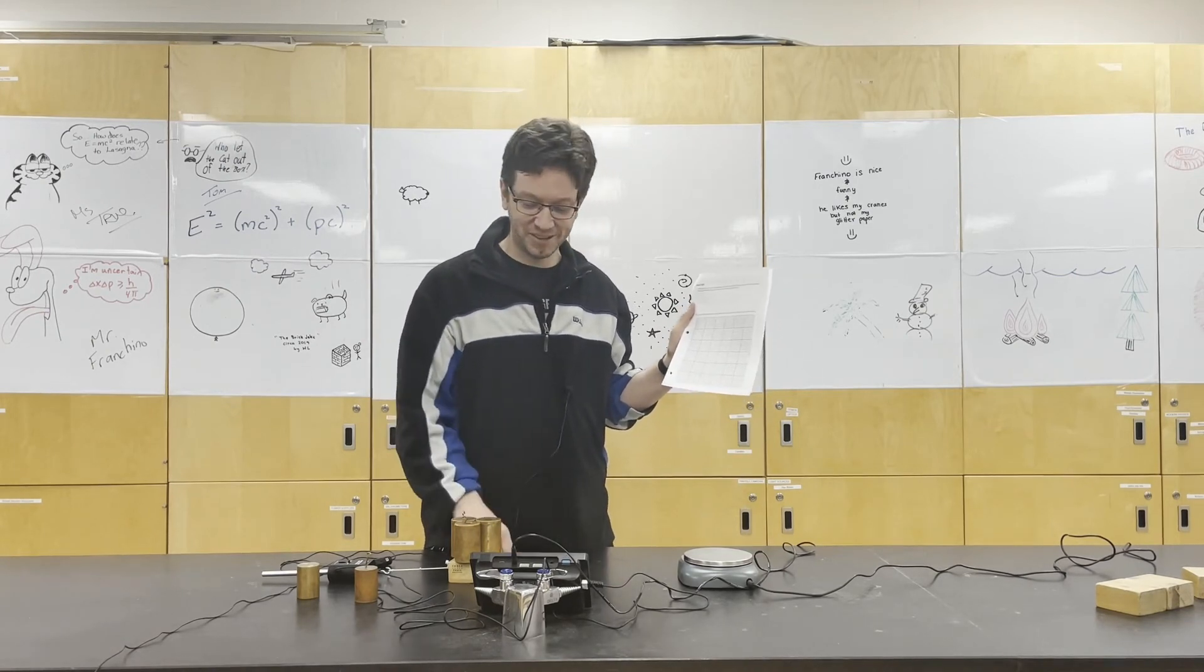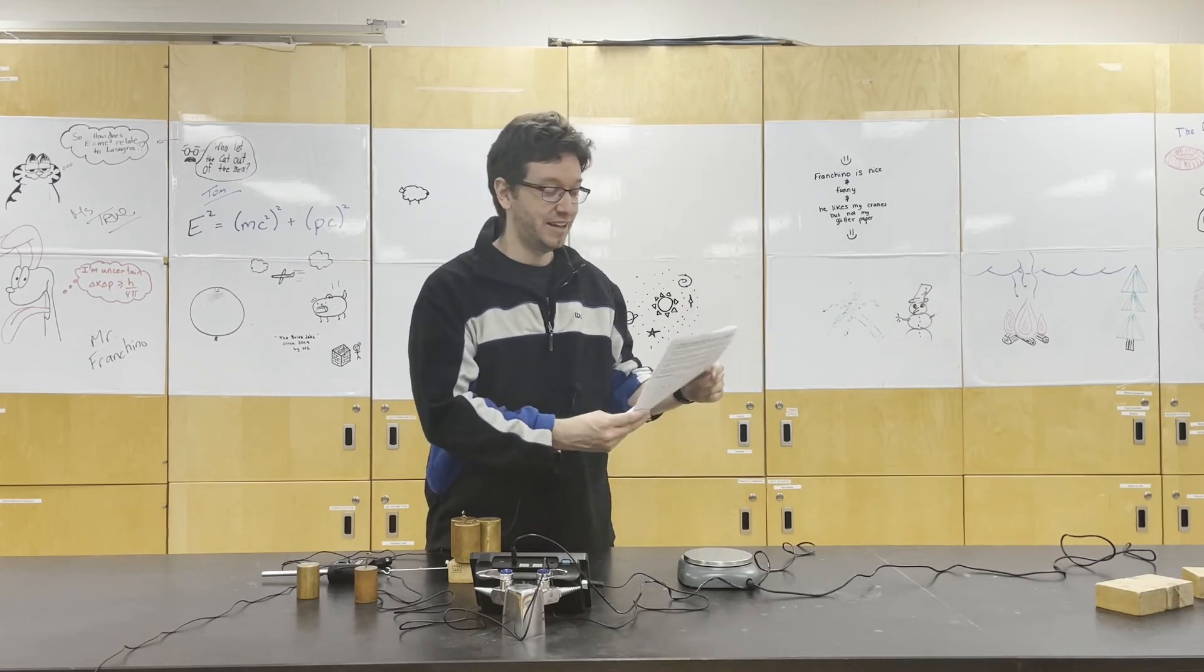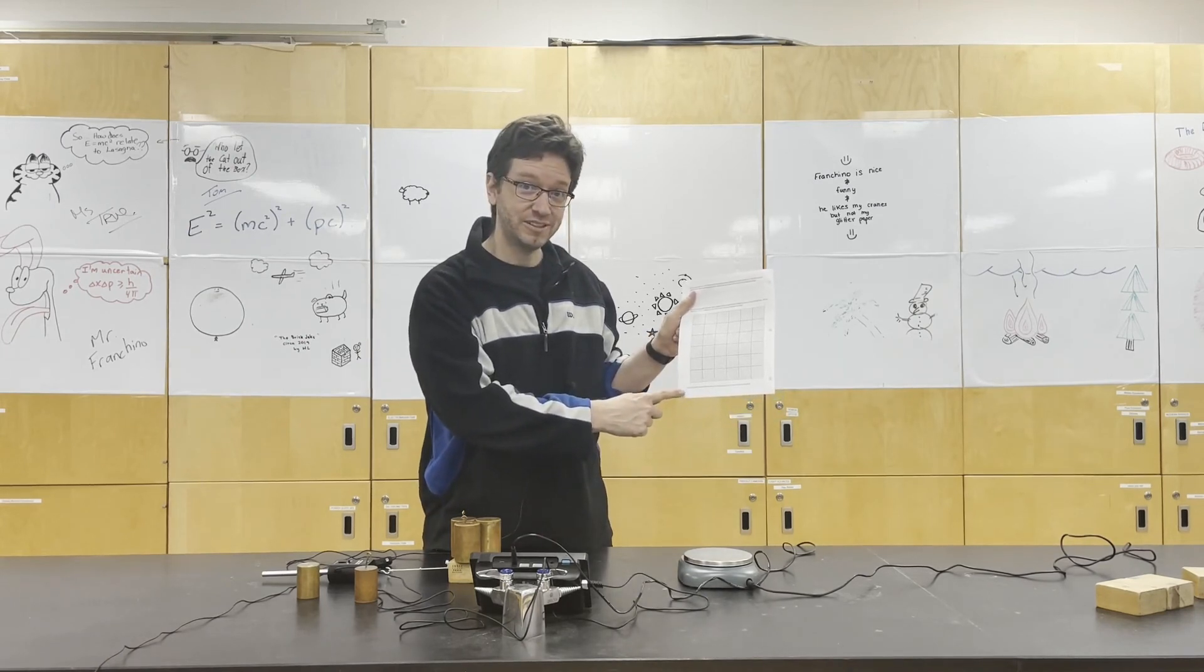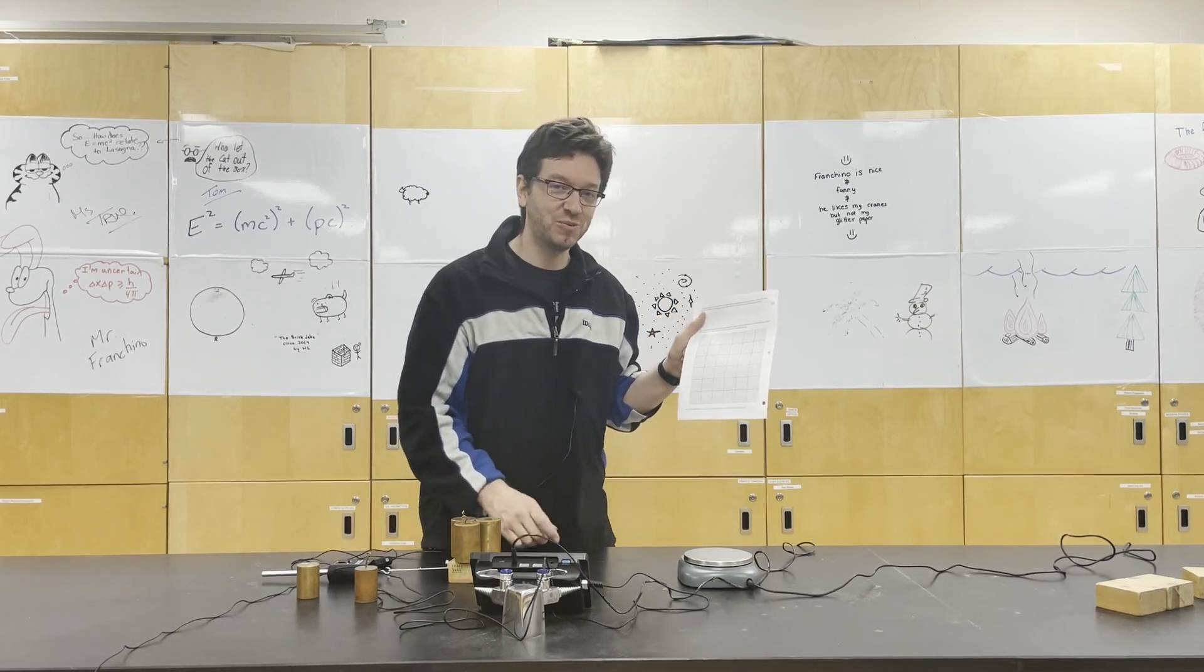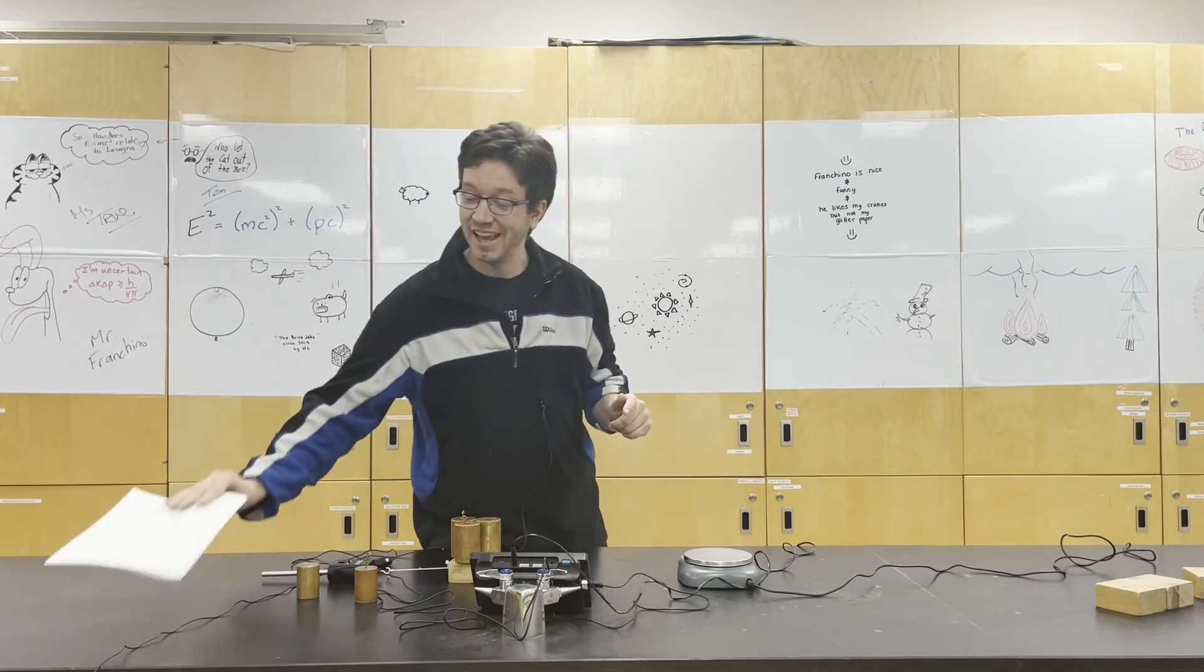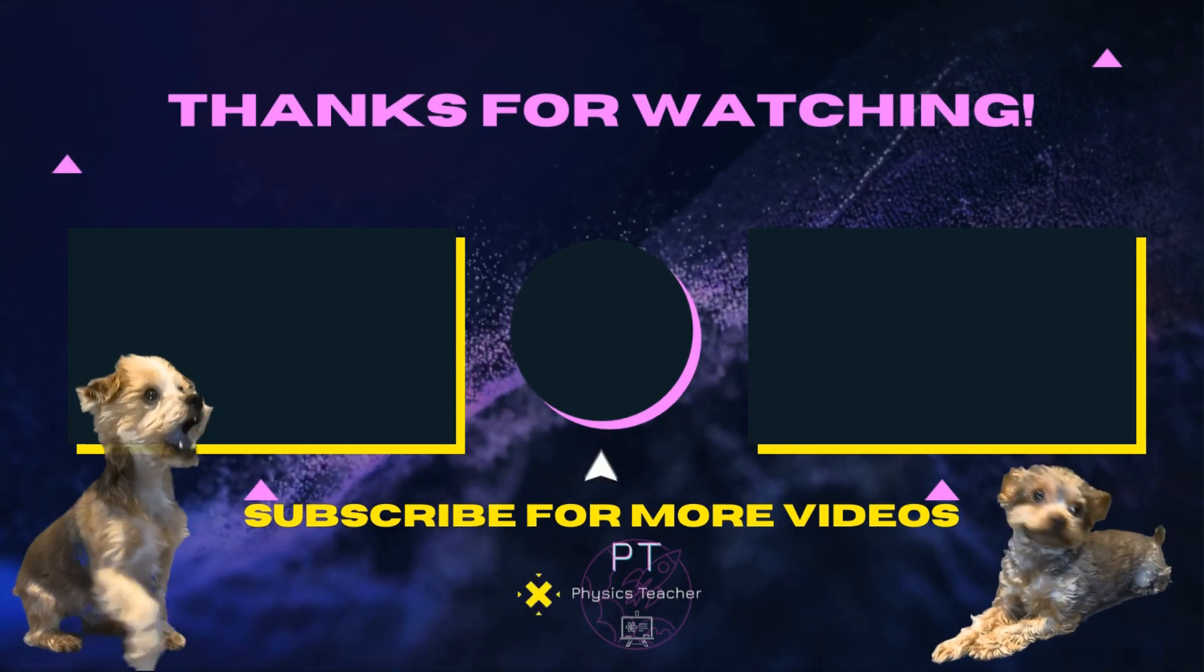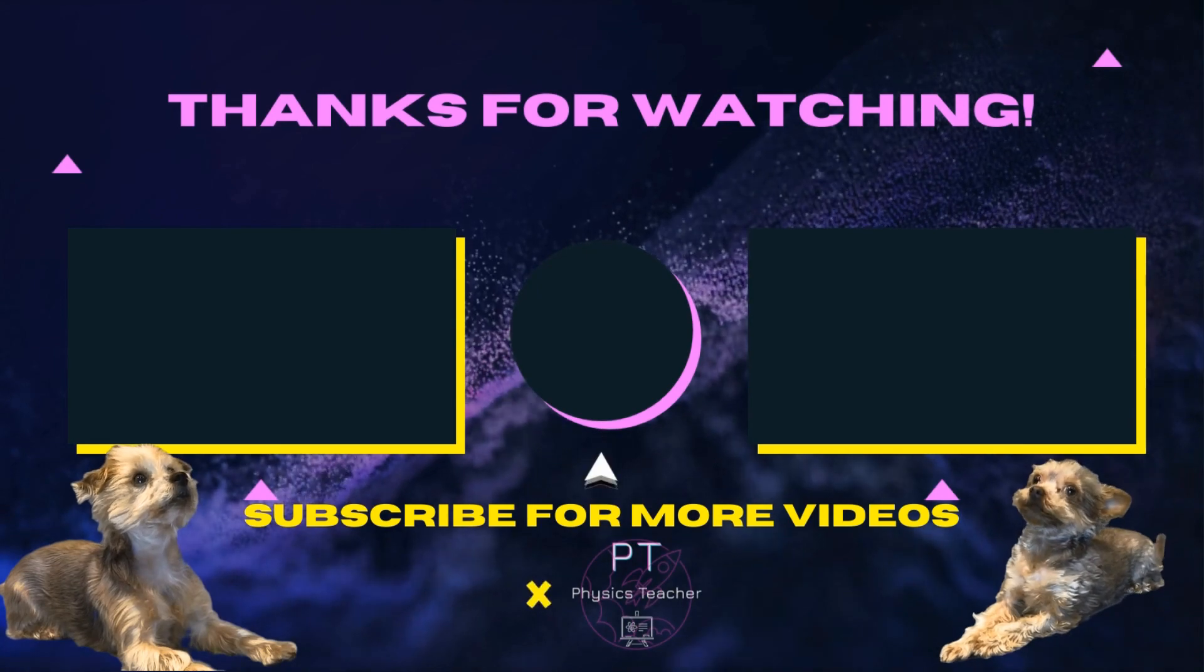Figure out what that is and let me know what the coefficient of static friction for this wooden block and lab table is. And then you're going to do the same thing where you're going to plot average kinetic force versus the normal force. And the slope of that graph will tell you what the coefficient of kinetic friction is. So let me know what you get in the comments. And make sure you subscribe so you don't miss the next lab. Bye.